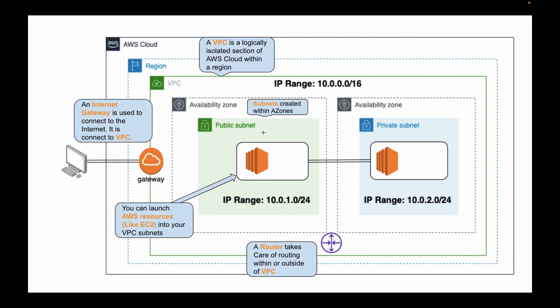In today's video we will see how we can connect to the EC2 instance which is in the private subnet, and later how we can access the internet through the NAT gateway. We can easily access the internet in the EC2 instance in the public subnet since we attached the internet gateway, but the private subnet does not have one, so we'll use the NAT gateway.